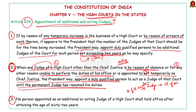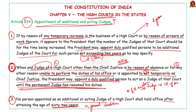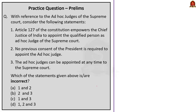Clause 3 of Article 224 states that additional judges or acting judges of the High Court shall hold office till the age of 62 years. As specific conditions: additional judges serve for a period not exceeding two years, and acting judges remain in office until the permanent judge resumes duties. In this discussion, we saw about additional judges, their appointment and conditions, and acting judges under the three situations when they are appointed.